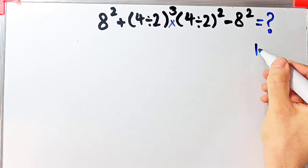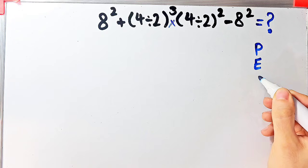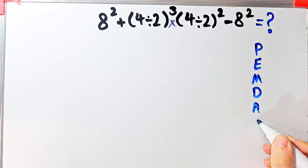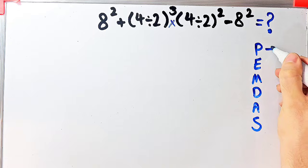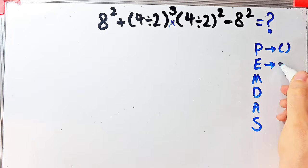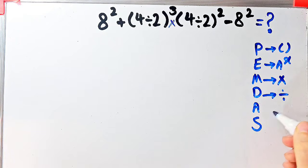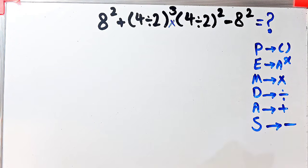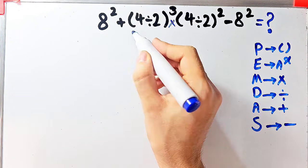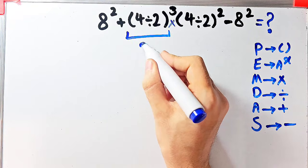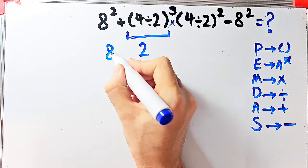To solve this question we need to follow the order of operations, which is PEMDAS. PEMDAS shows the priority of the mathematical operations. In this rule: P stands for parentheses, E stands for exponent, M stands for multiplication, D stands for division, A stands for addition, and S stands for subtraction. According to this rule, first we simplify the parentheses. Inside the first parentheses we have four divided by two. Four divided by two equals two.